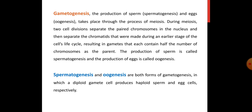During meiosis, there are 2 cell divisions that separate the paired chromosomes in the nucleus. Meiosis 1 and meiosis 2 — meiosis 1 is called reduction division, in which paired chromosomes inside the nucleus are separated and half reach the next stage. The gametes that are formed contain half the number of chromosomes. The production of sperms is called spermatogenesis and the production of eggs is called oogenesis.